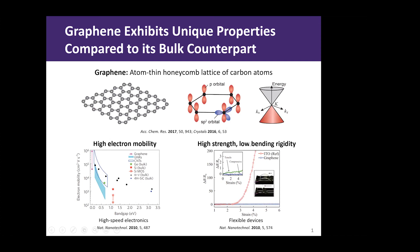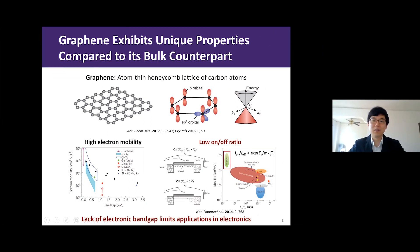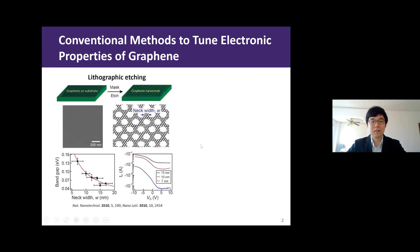In addition, graphene has high strength and low bending rigidity, and thus is beneficial for creating flexible electronic devices. However, graphene lacks an electronic band gap, which limits the types of electronic devices that can be realized. For example, if you use graphene for transistors, it cannot function well because it has a low current on-off ratio, which governs the ability to turn current on and off in electronic circuits. There are several methods to tune the properties of graphene, and one method is to introduce nano-hole arrays.